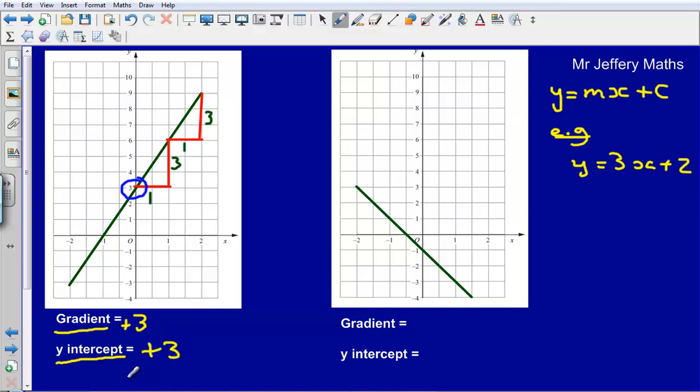Now what we can say then is that our graph, the equation for our graph, is y equals 3x plus 3. Now this 3 is coming from our gradient. This 3 here is coming from the gradient. The plus 3 is the y-intercept. Probably haven't chosen the best numbers there, but hopefully you can get the picture.